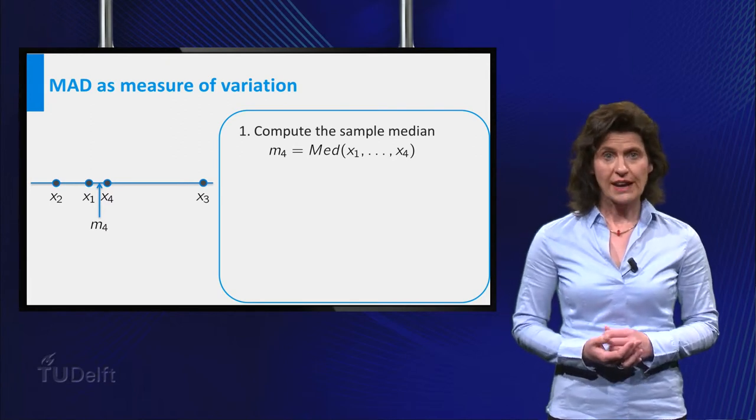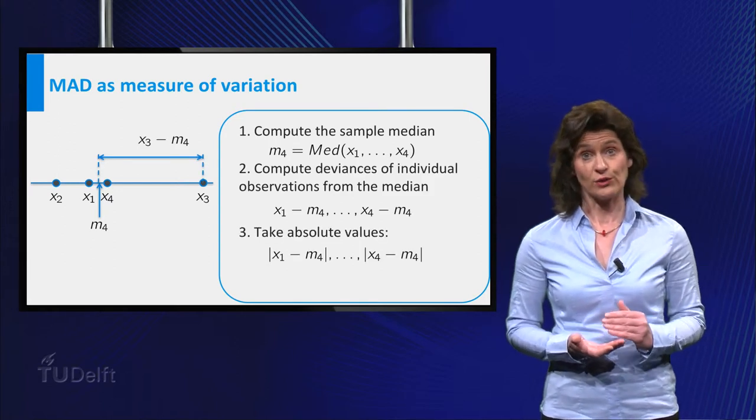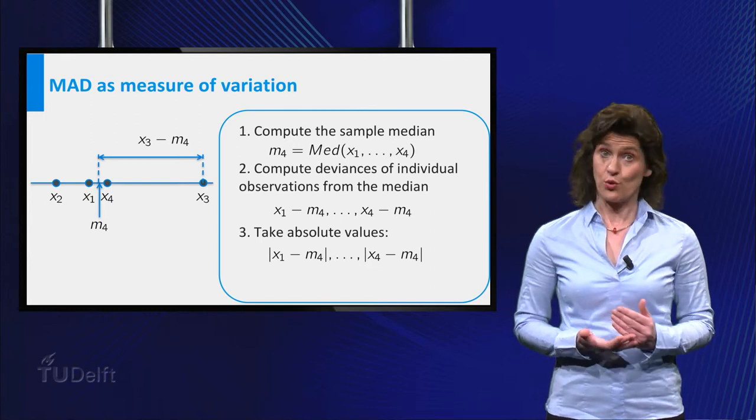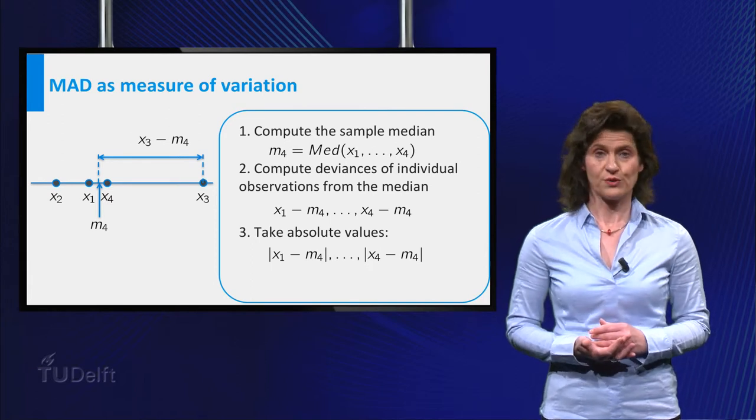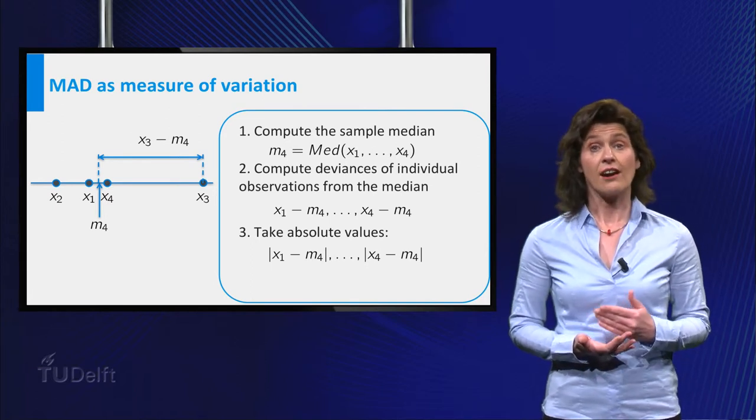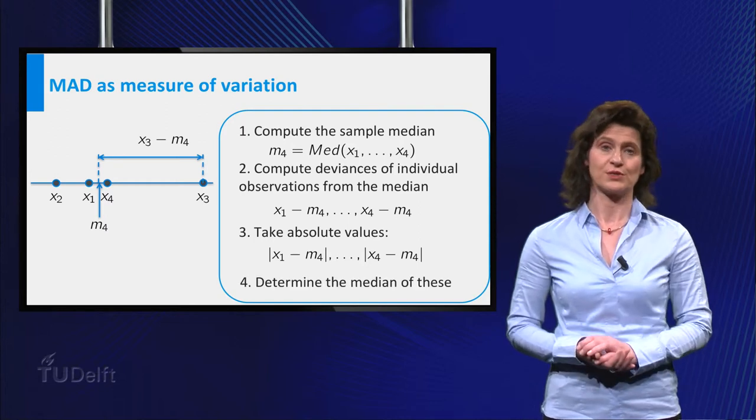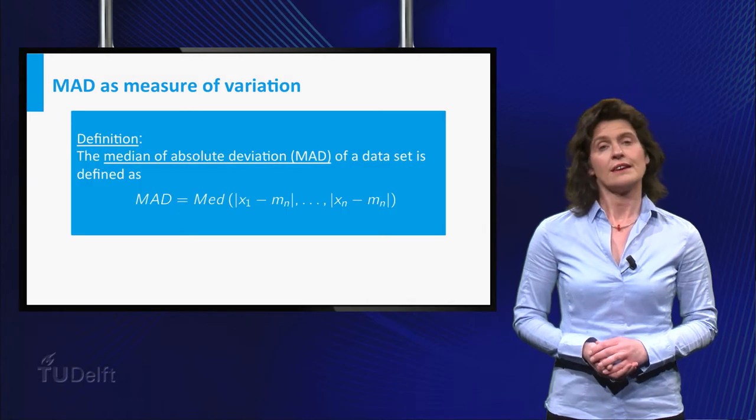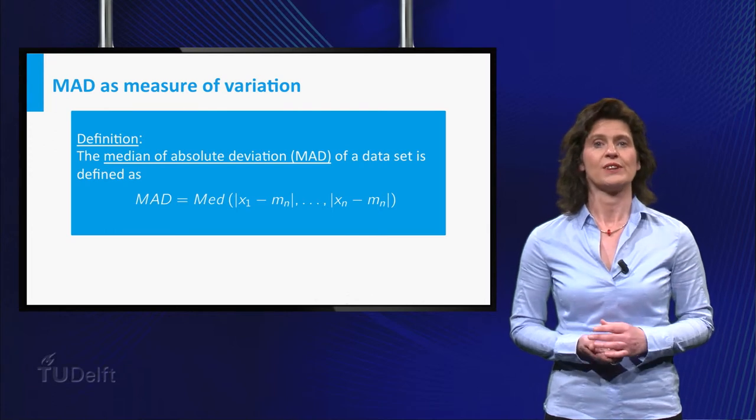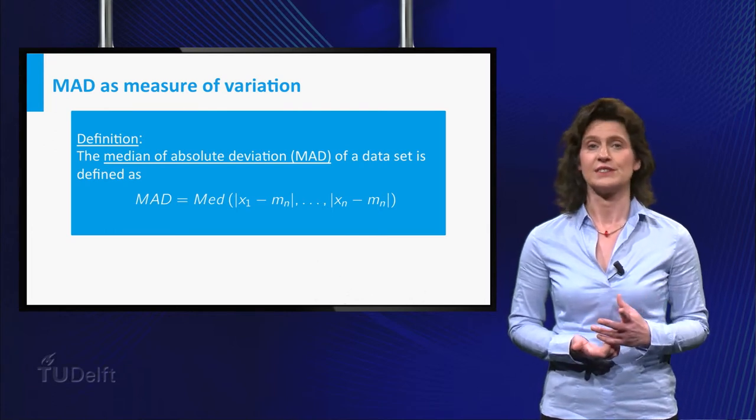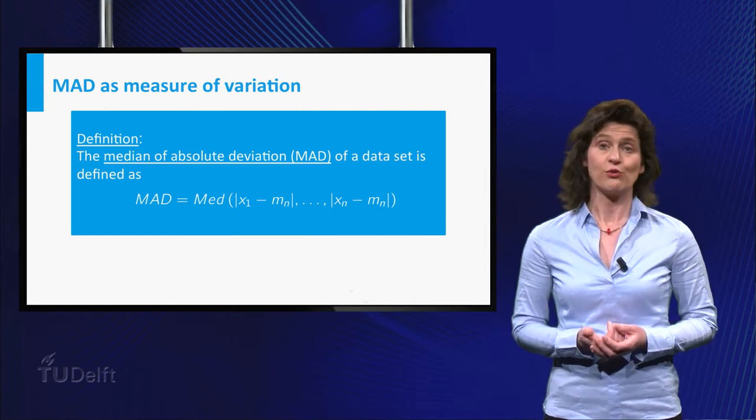Then compute for every individual data point the difference with this median and the absolute values of these differences. These are four non-negative numbers. Large values of these numbers indicate that here the data are highly variable. Finally, compute the median of these values. Actually, the definition of the MAD may look a bit more natural than the definition of the standard deviation, which is scaling. But the standard deviation is in practice the most often used measure of spread.